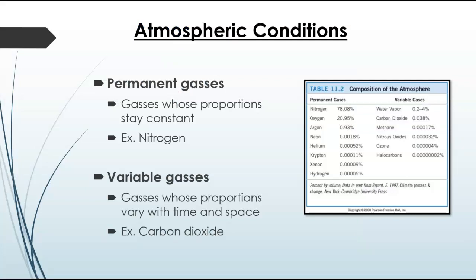We need our greenhouse gases because without them we would be frozen — about zero degrees with ice everywhere; it wouldn't be a habitable planet. These atmospheric greenhouse gases serve a purpose and it's been going on for a long period of time. We have some permanent gases that are fairly constant and not really changing much, but there are also some variable gases which can change for a variety of reasons.